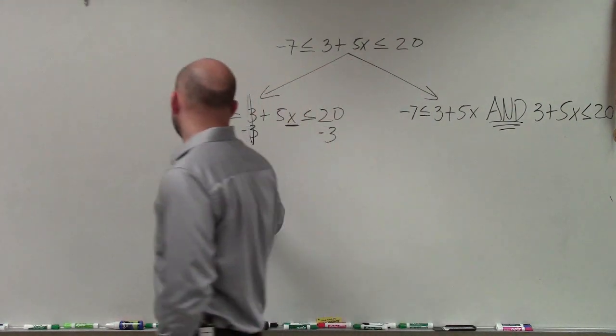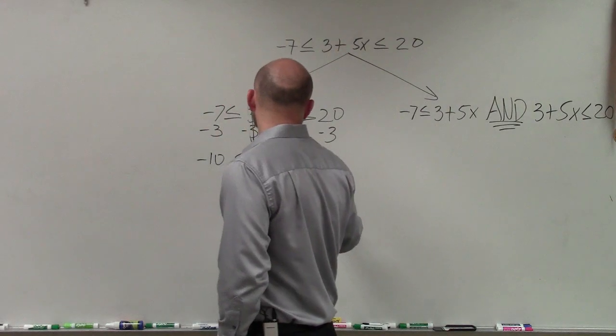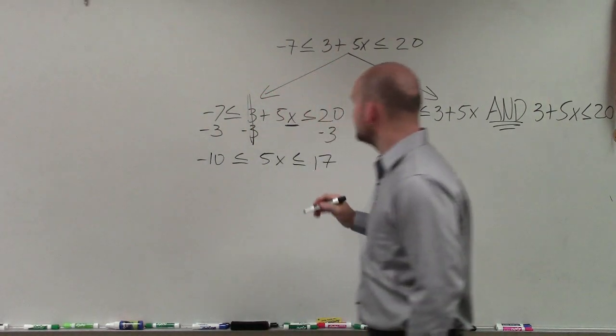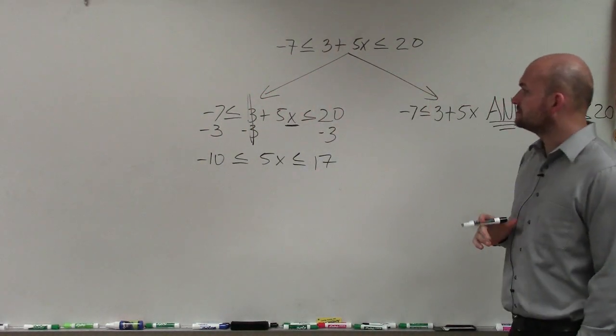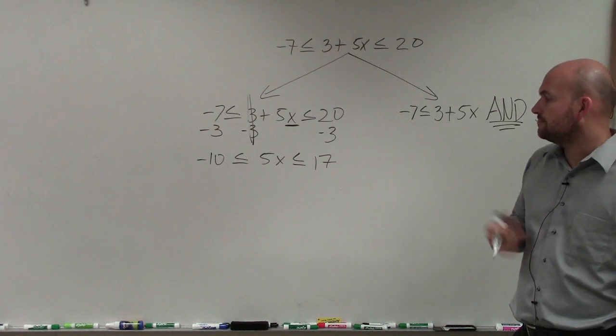This now becomes -10 ≤ 5x ≤ 17. Oh, that was supposed to be a negative 20. Or not, really. But that's OK.